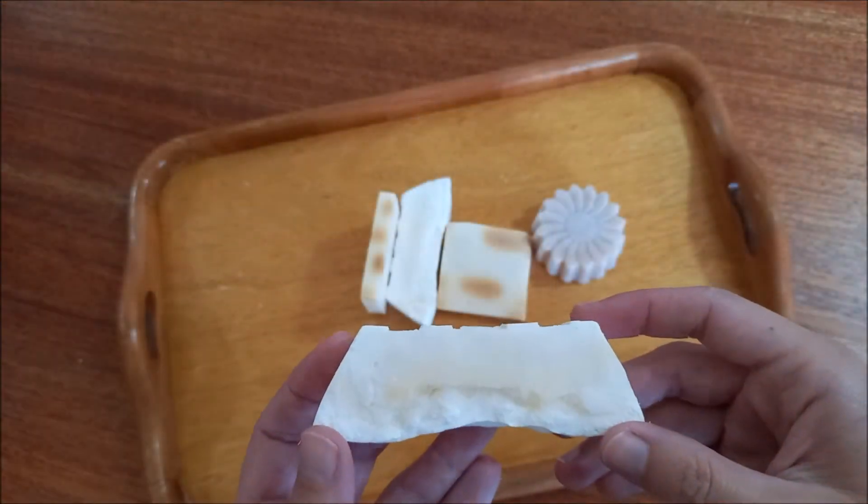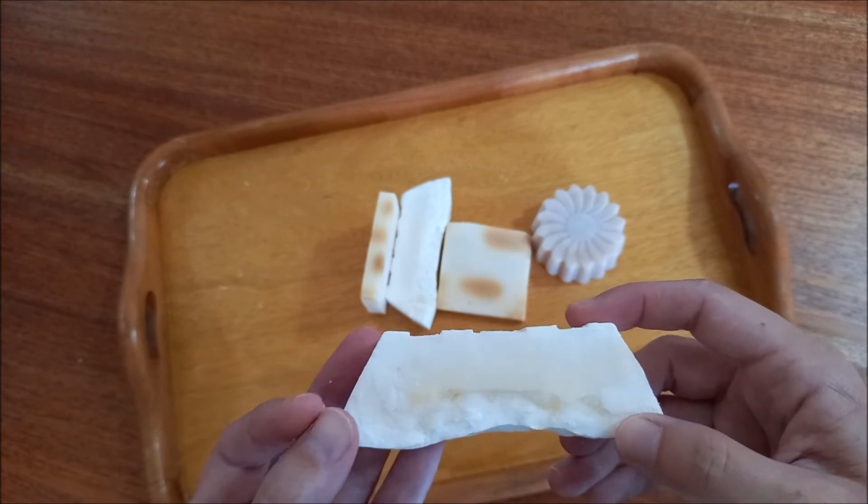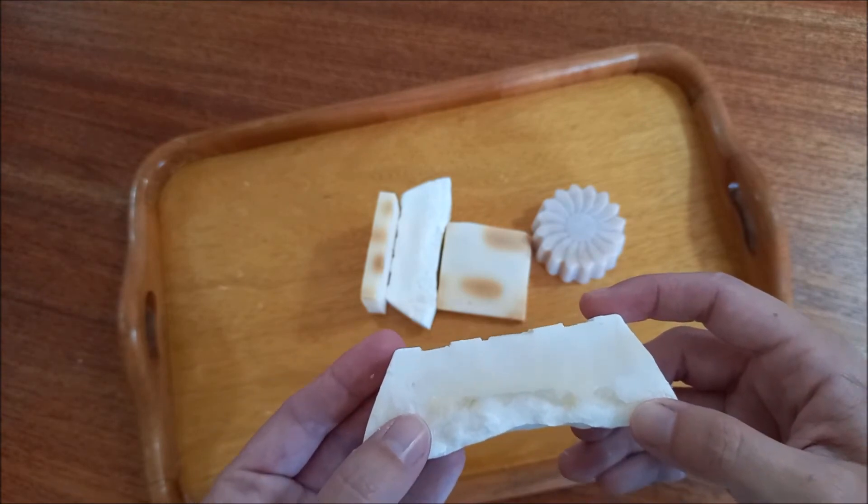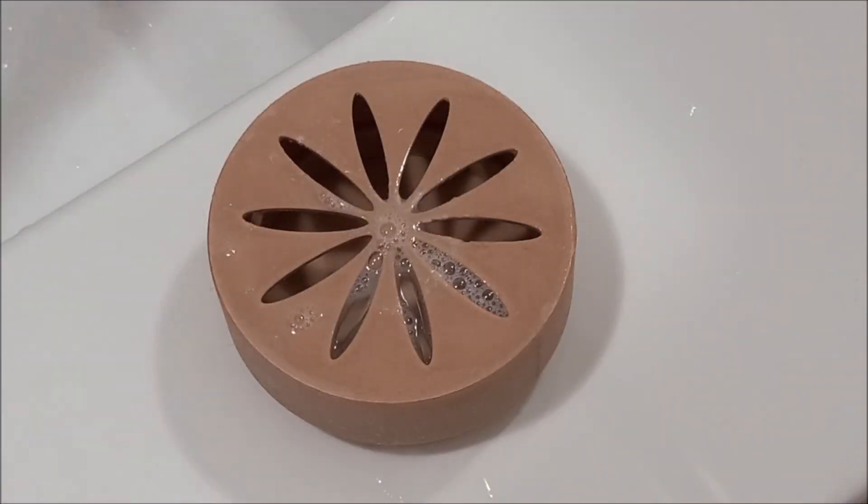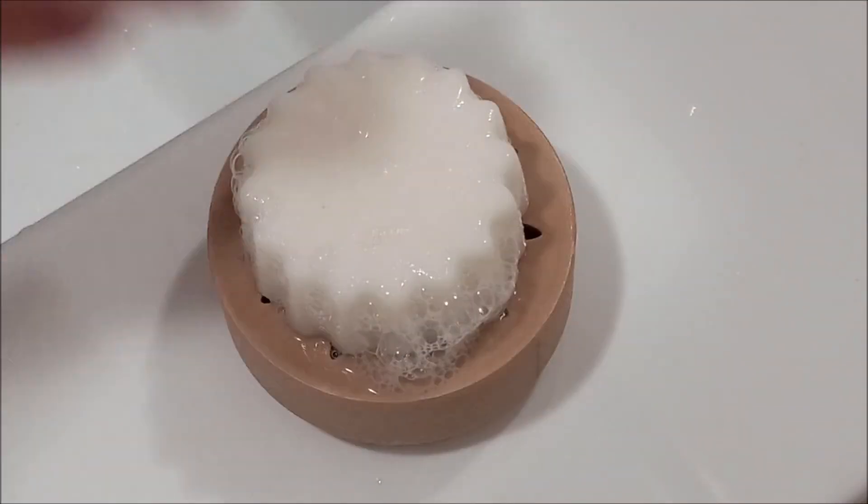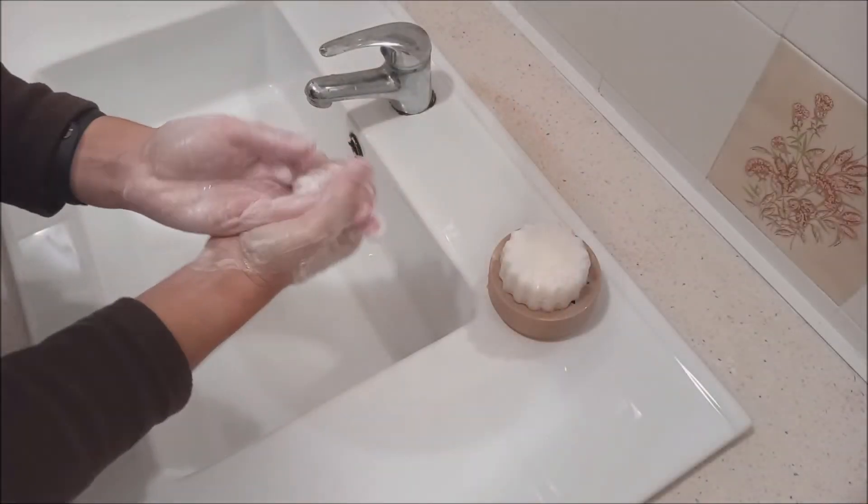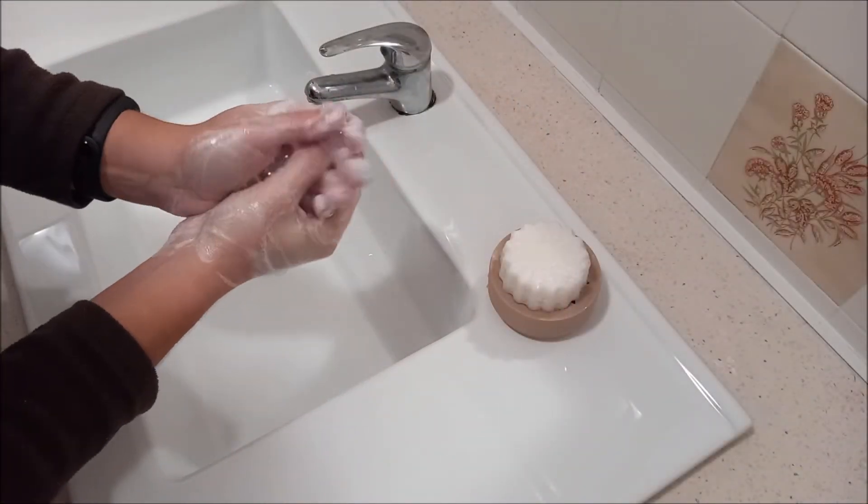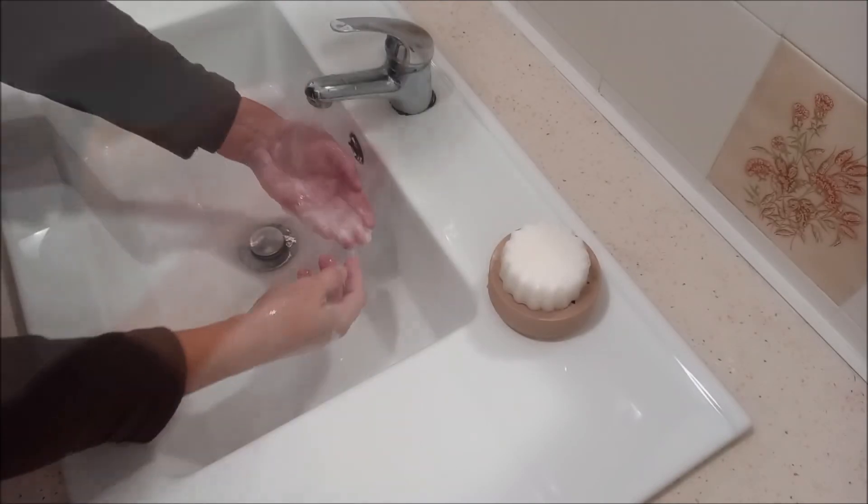The first sign that soap is going bad is when dreaded orange spots appear accompanied by rancid odor. If the soap is to be used immediately after curing, it should be placed in soap dishes so that it can drain off the water and last longer. If left in water, the soap will break down more easily.